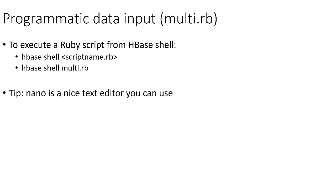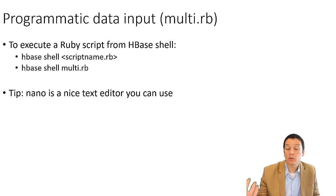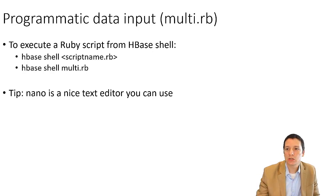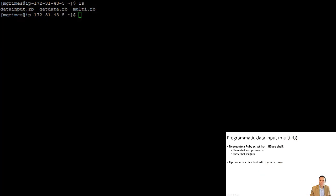To execute this Ruby script, from our Linux command prompt — not from inside HBase shell — we say 'hbase shell' and then the name of the Ruby program. In this case we call it multi.rb. This tells the shell to execute the Ruby program. Let's flip over to HBase and see what this looks like.